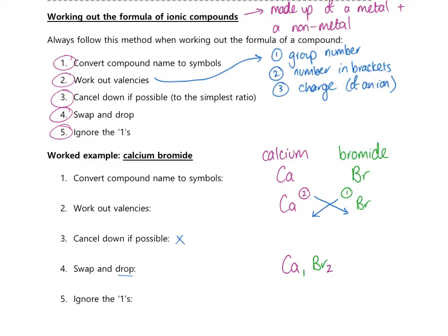The last step is to ignore the ones. You'll be aware from formulas like water — it's H2O, not H2O1. We don't need ones in formulas. So we simply write this as CaBr2, with no space between the symbols.